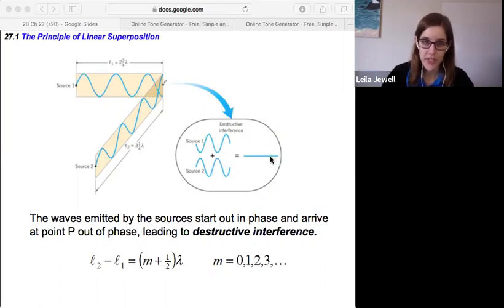The condition for this is very similar to our constructive interference, but instead of being m times a wavelength, it's m plus one half of a wavelength. The difference in path length needs to be offset by half of a wavelength, and that's exactly how much you need to shift one relative to the other so that it will now be destructive interference.